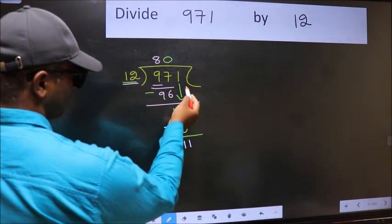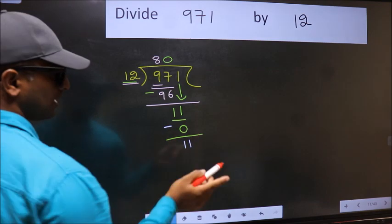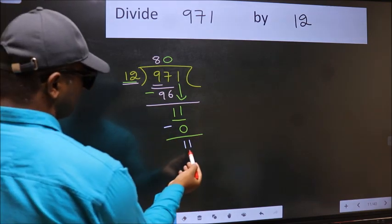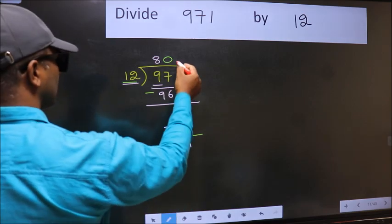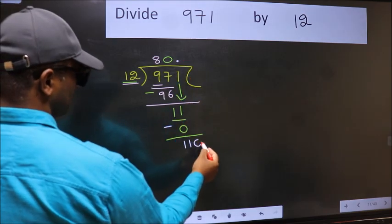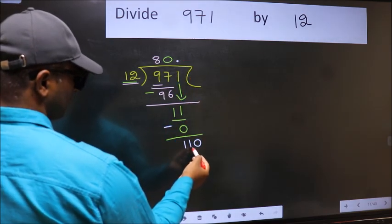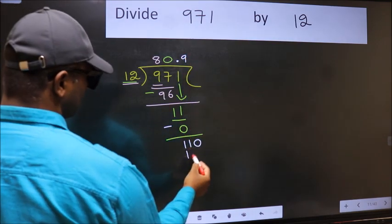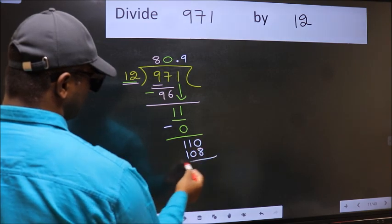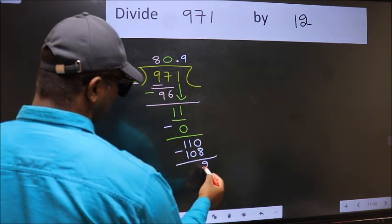Over here, we did not bring any number down, and 11 is smaller than 12. So now we can place the decimal and take 0. A number close to 110 in the 12 table is 12×9 equals 108. Now we should subtract. We get 2.